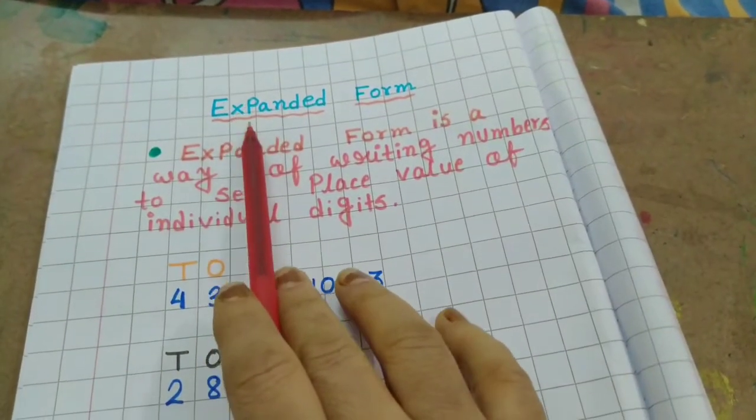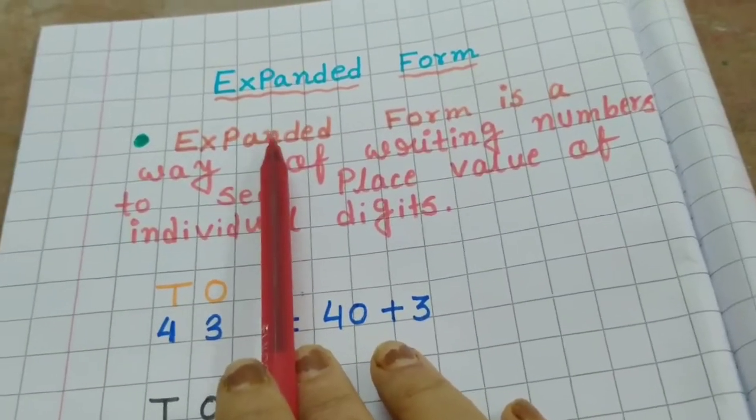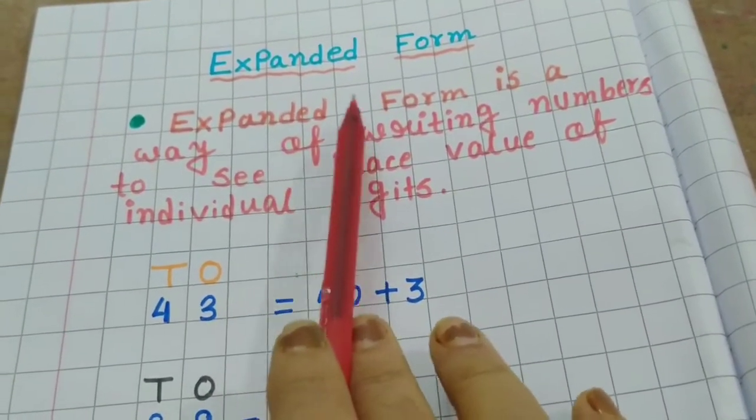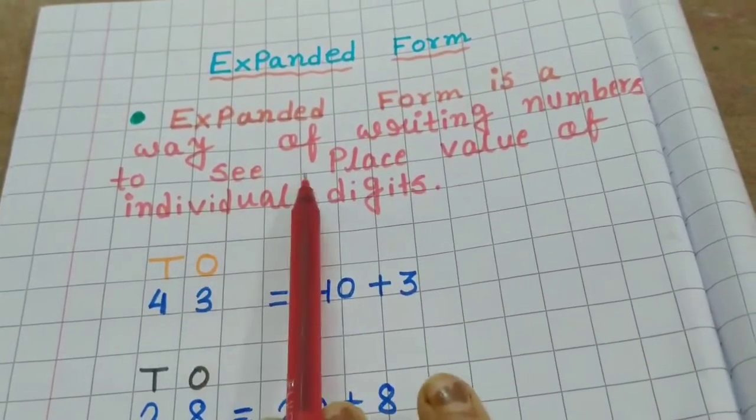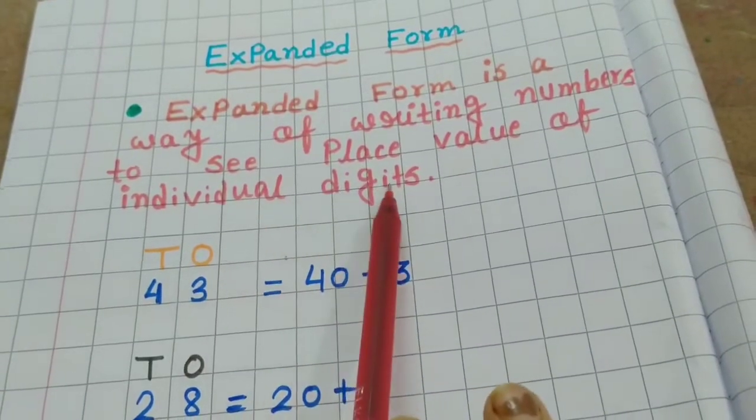You can see here also I have written expanded. Here also I have written what is the meaning of expanded form. Expanded form is a way of writing numbers to see place value of individual digits.